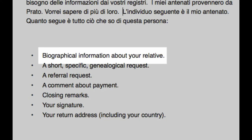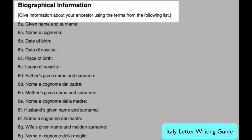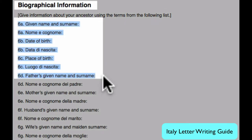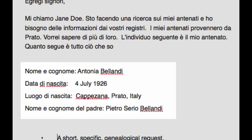Next, we will give as much biographical information as we know about the relative we are inquiring about. The letter writing guide provides several options. I'm just going to select name, birth date, birthplace, and father's name in this case.